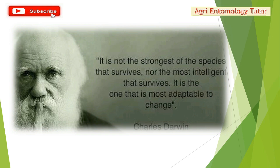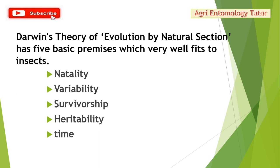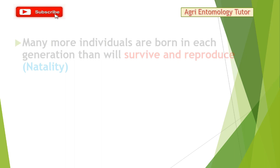Charles Darwin said: it is not the strongest of the species that survives, nor the most intelligent — it is the one most adaptable to change. This definition holds especially well for insects. Darwin's theory of evolution by natural selection gave five basic premises that are well suited for insects.